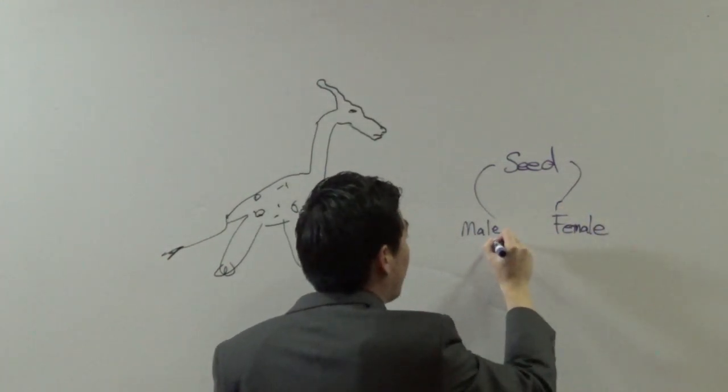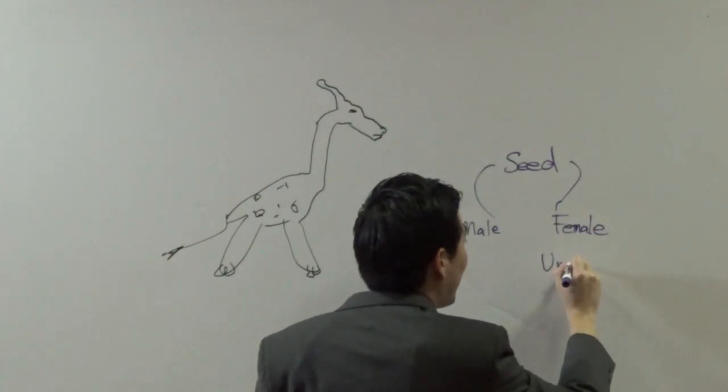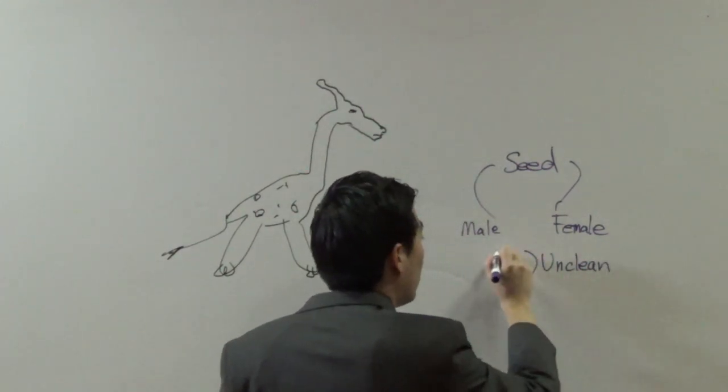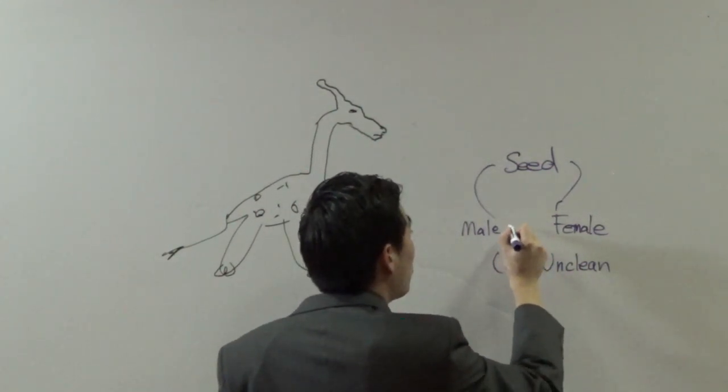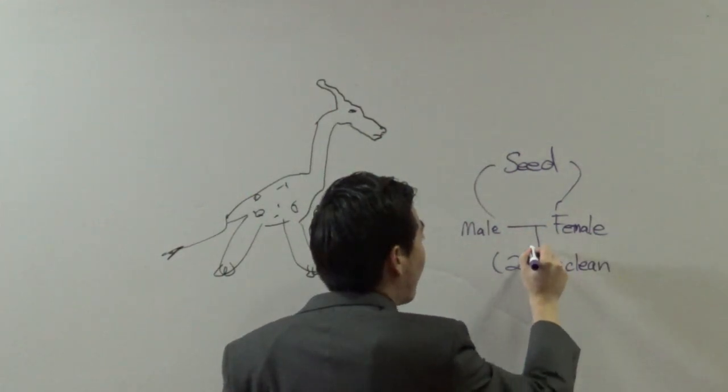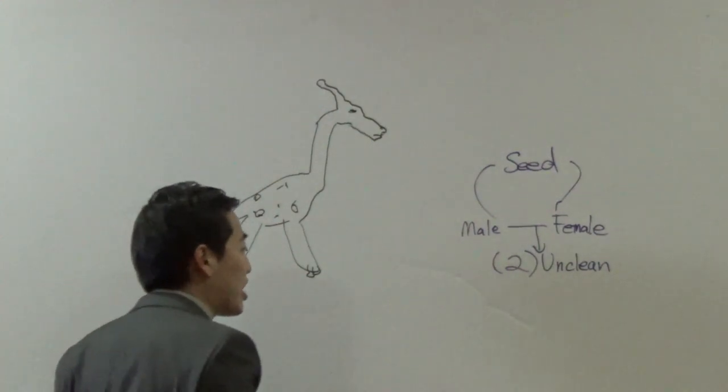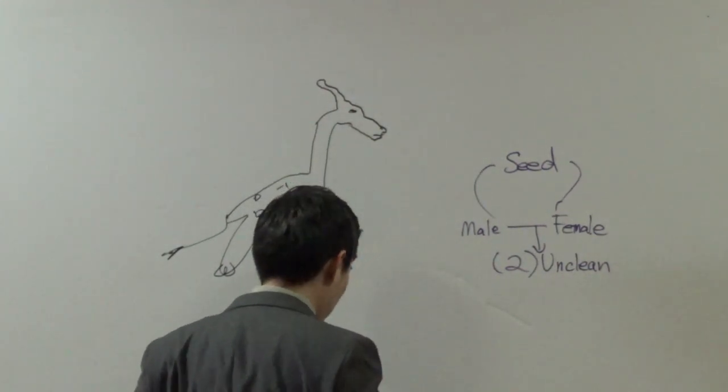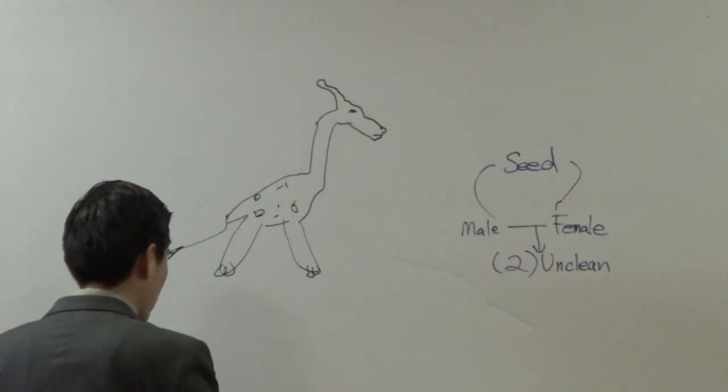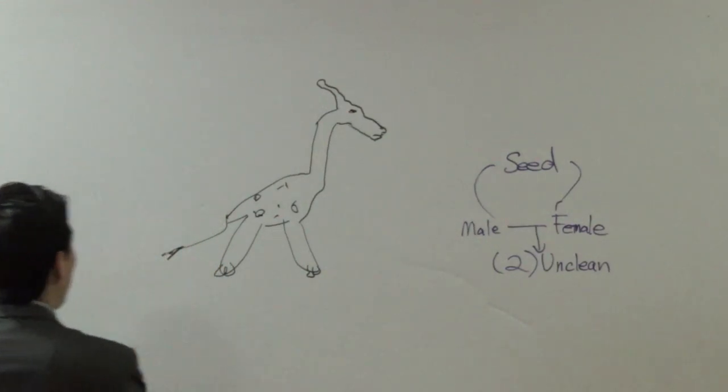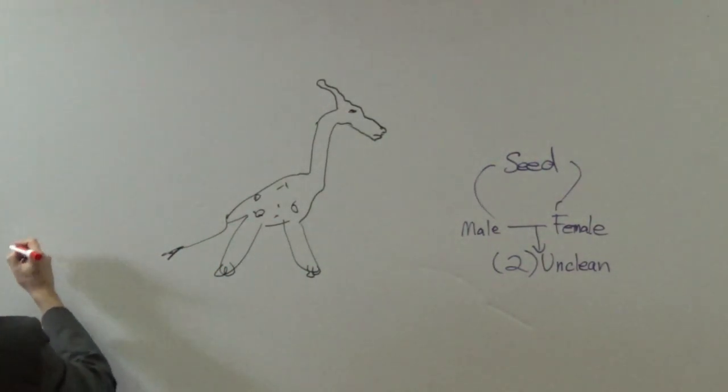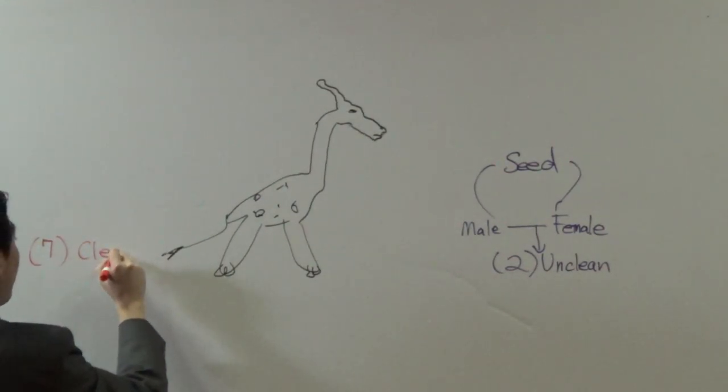For unclean. So because it's unclean, it shows how much God doesn't really approve of this. So because he doesn't really approve of this, that's the reason why he'll have them at a smaller number, two. But then with clean animals, he likes those better. So with clean animals, because he likes those better, he wants it at a higher number. But now here's the question. Why is it that he would want seven? Why would he want seven to be clean?